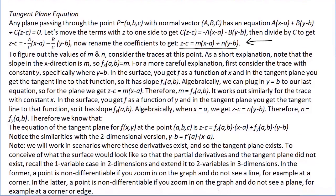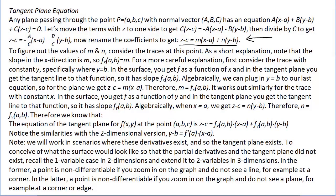A quick comment: so far we've assumed that derivatives exist and tangent planes exist. What if they don't? In the one-variable case, a point is non-differentiable if you zoom in and don't see a line — for example, you might see a corner. For z equals f of x y, a point is non-differentiable if you zoom in and don't see a plane. You might see a corner like a cone, or an edge like a folded sheet of paper.